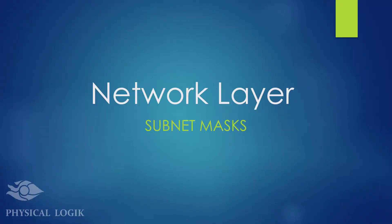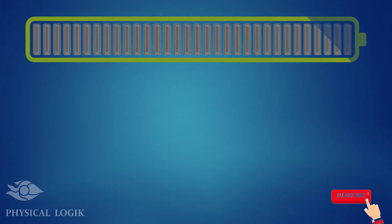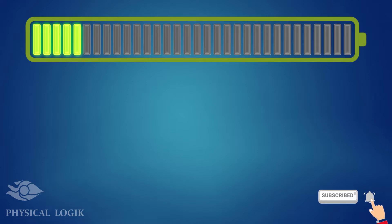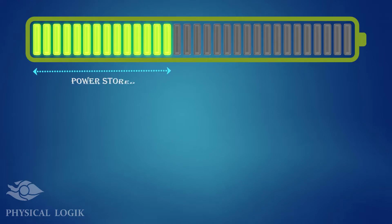Hello guys, today we'll talk about the subnet mask. Let us understand subnet mask using this battery level indicator. There are 32 bars used to show the power level of this battery. The green portion tells us the amount of power left, and the grey portion tells us the amount of power used.